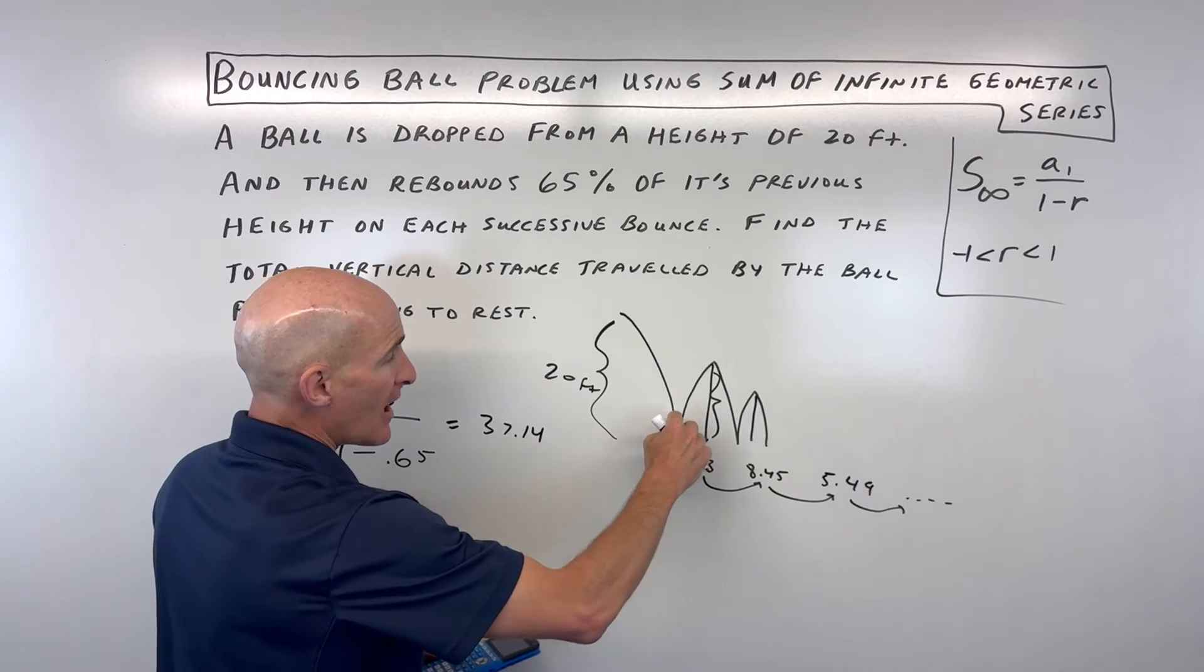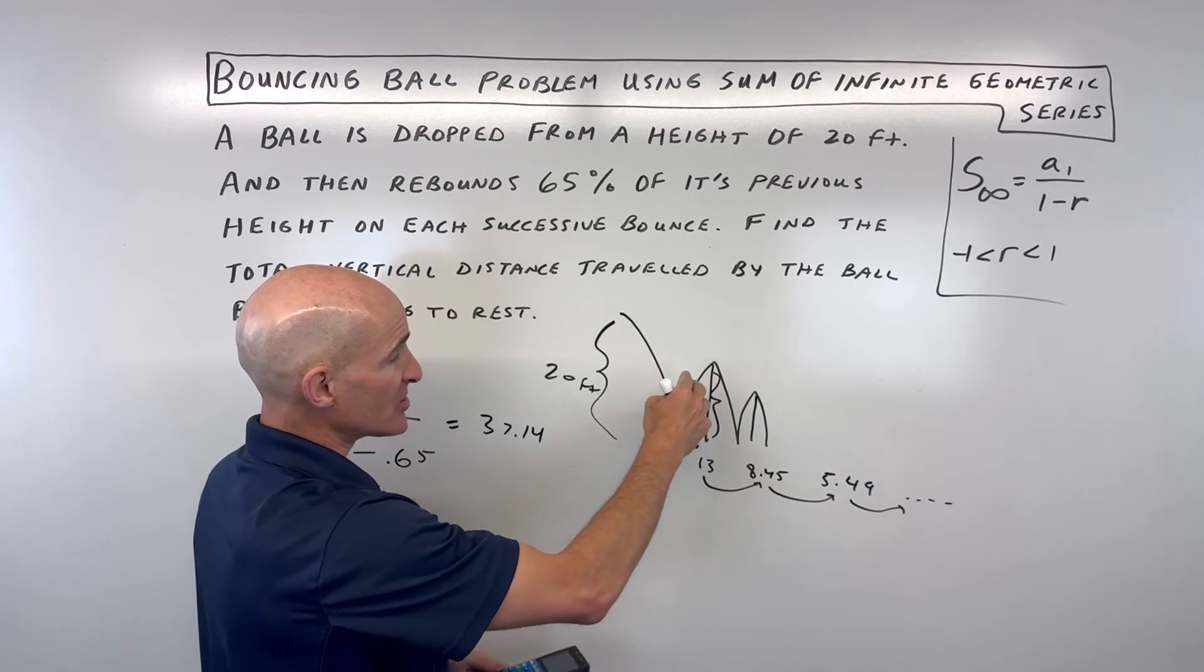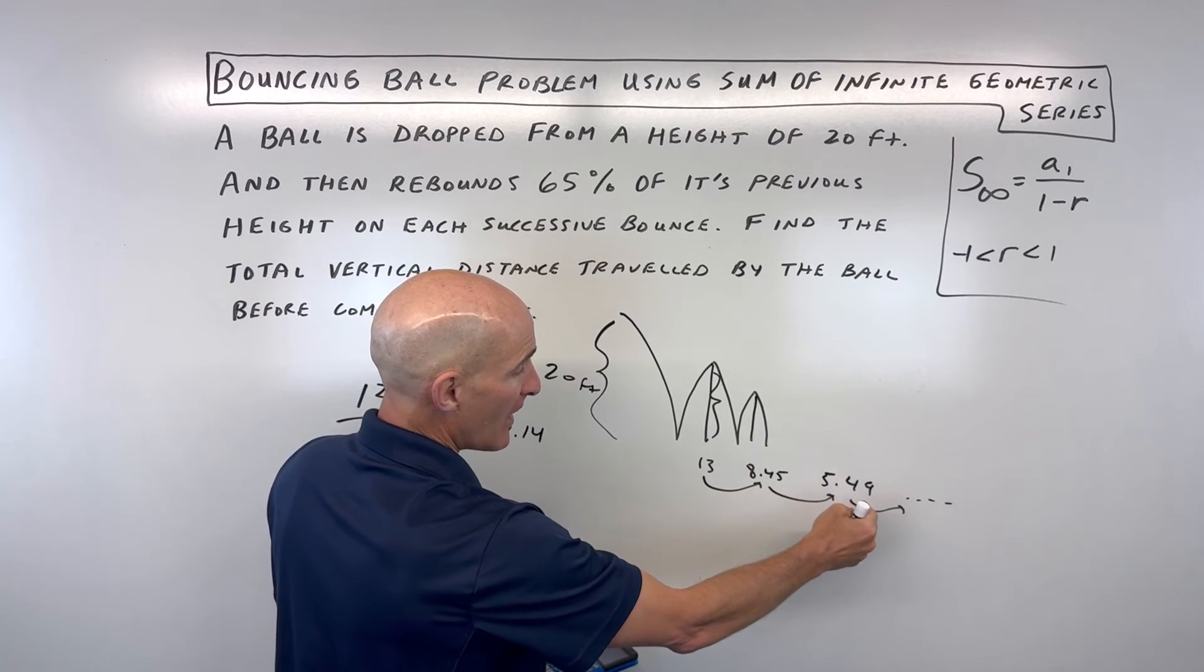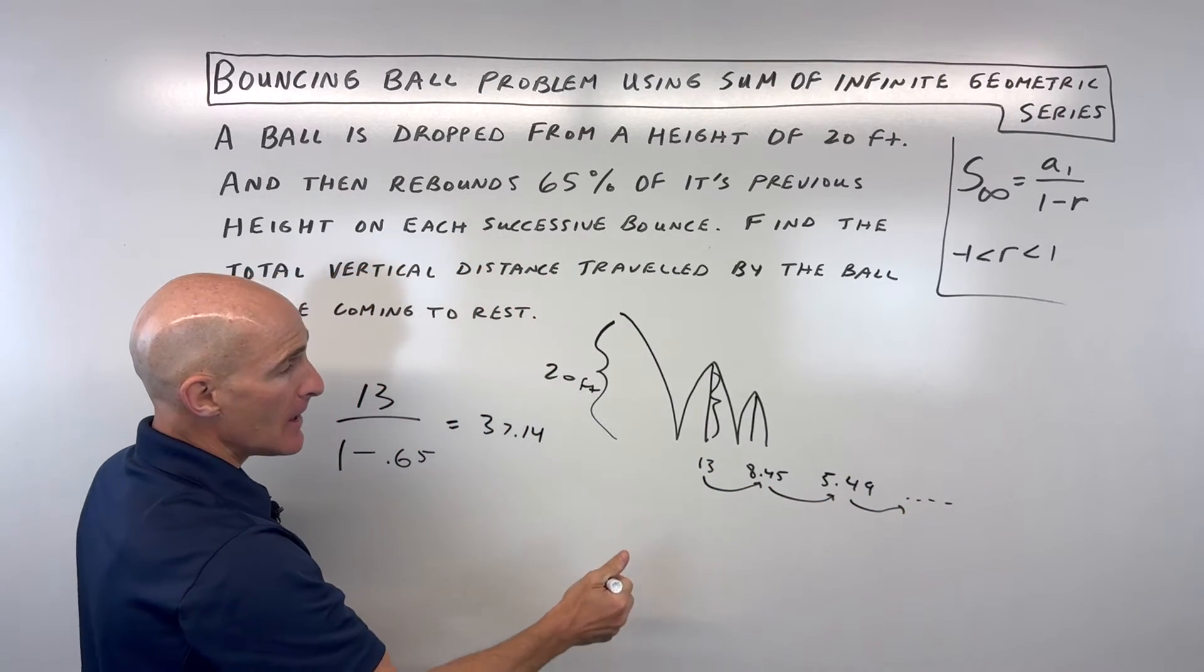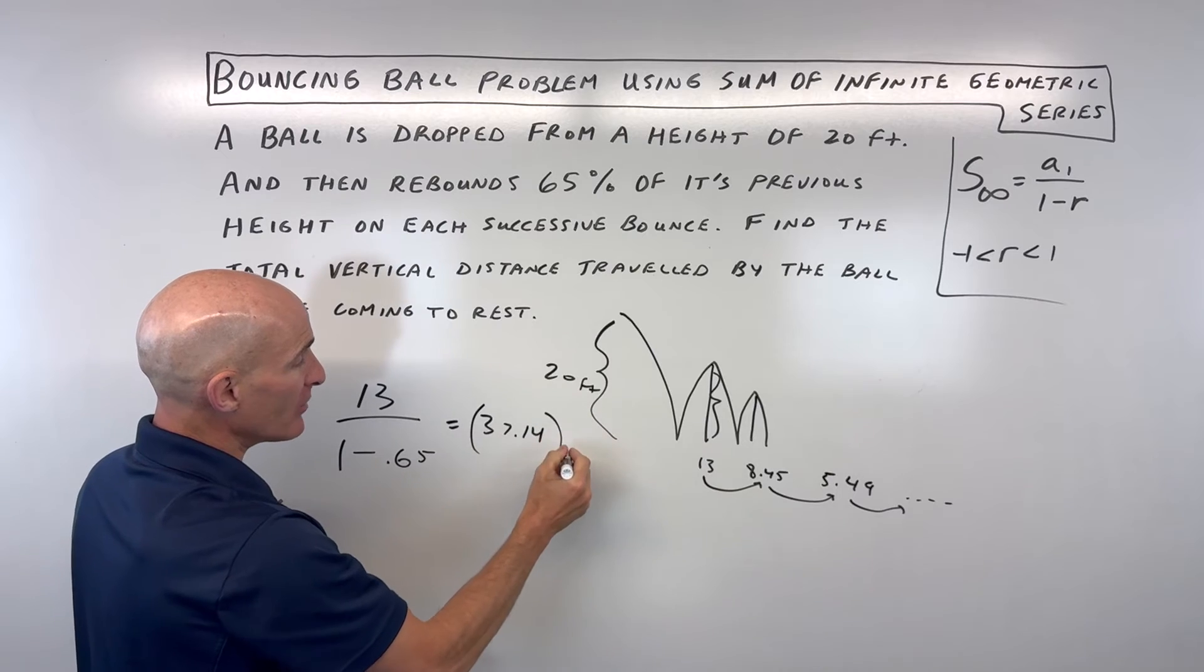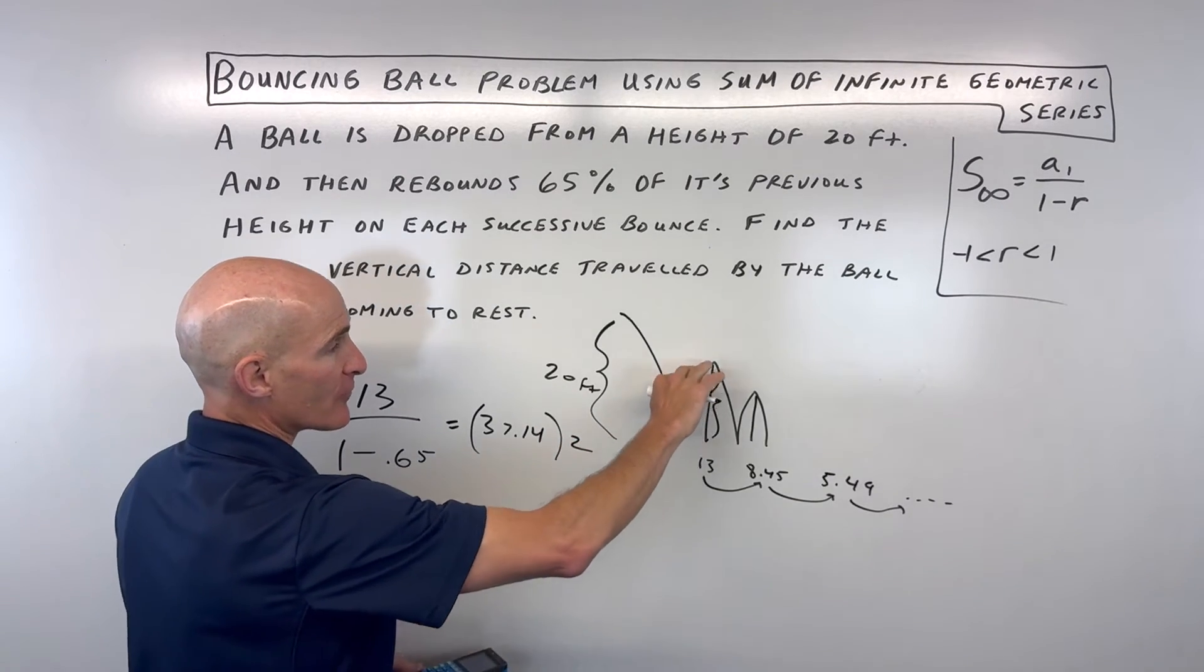But that's just counting not the up and the down. It's just 13, 8.45, 5.49, etc. We're going to have to actually double this to count for the up and down.